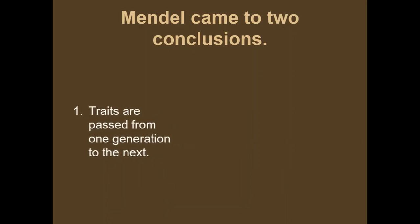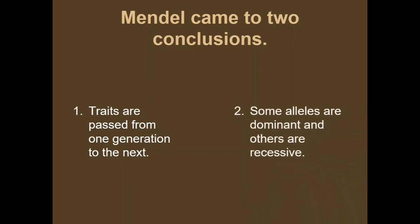He came to two conclusions from his experiments. First, he found that traits are passed from one generation to the next. Second, he found that some alleles are dominant and others are recessive. We're going to talk about those right now.